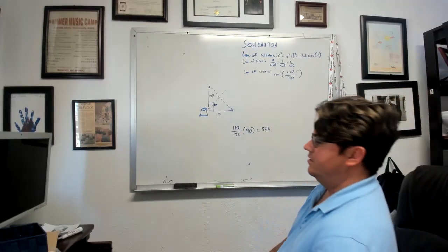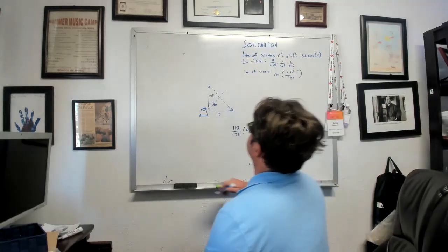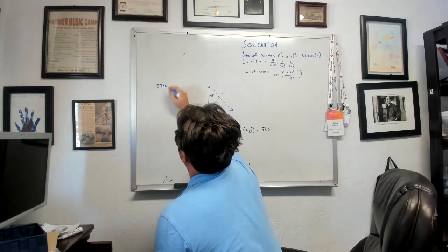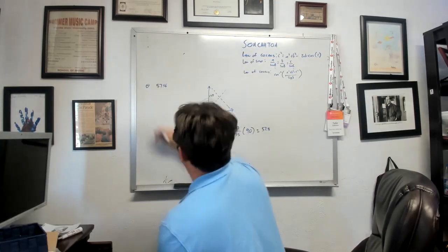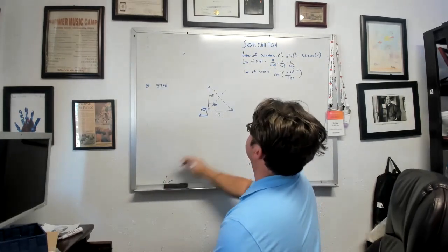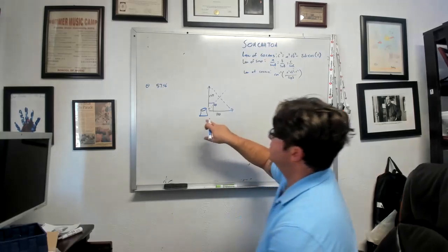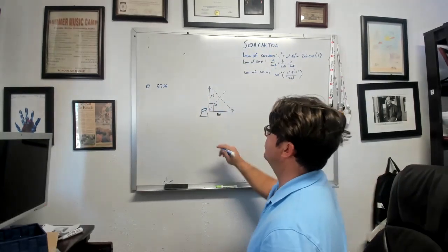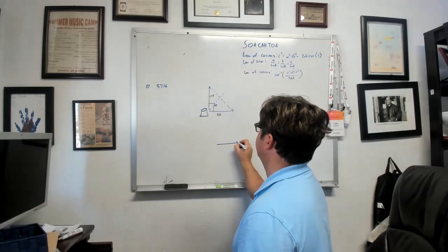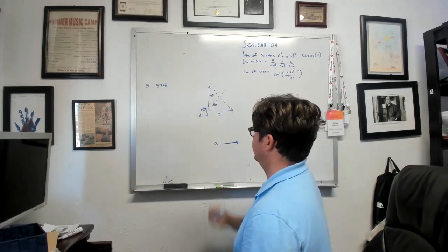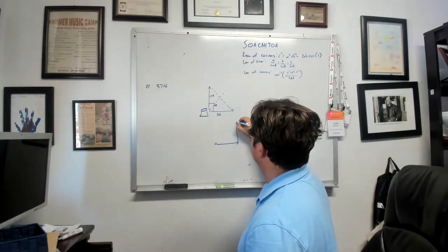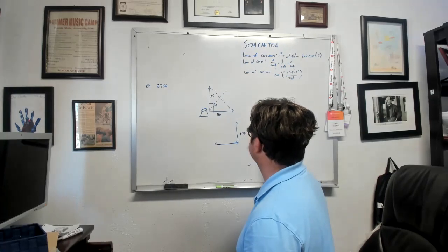Now we need to calculate the force. So let's say 57.8 is theta. So with questions like this, we can think about each one of these as their own vector. So we have 110 at 0 degrees and then we have 175 at 90 degrees.